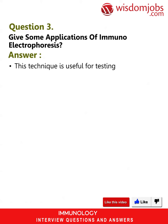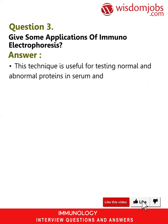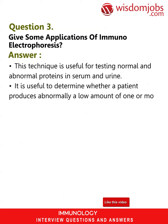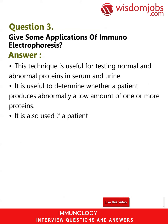Question 3: Give some applications of immunoelectrophoresis. Answer: This technique is useful for testing normal and abnormal proteins in serum and urine. It is useful to determine whether a patient produces an abnormally low amount of one or more proteins. It is also used if a patient overproduces some serum proteins.